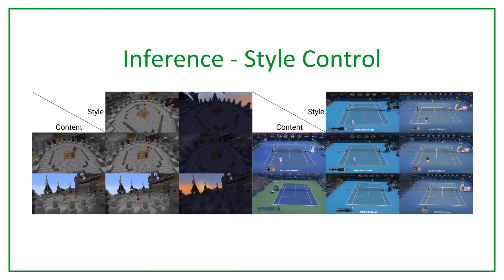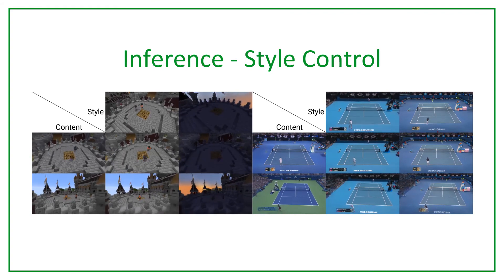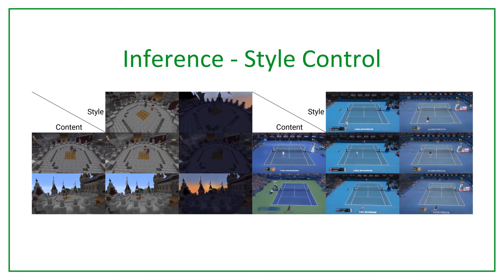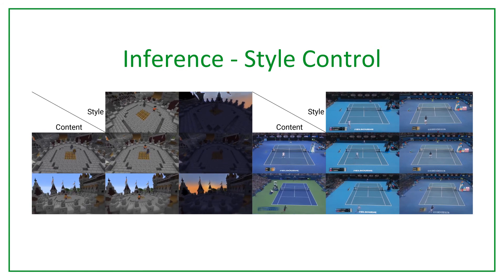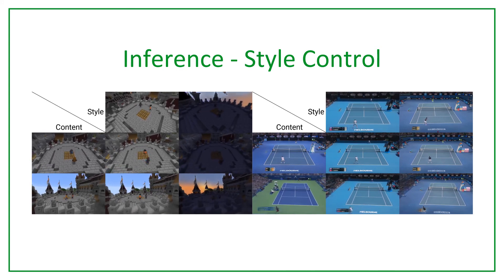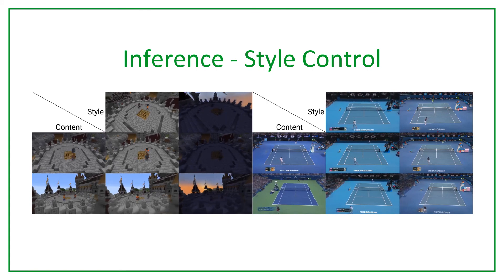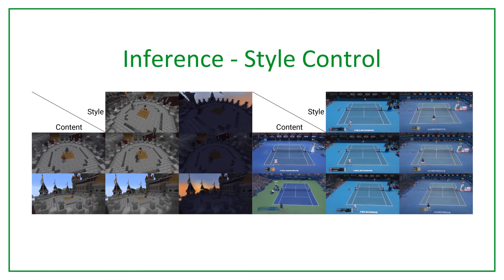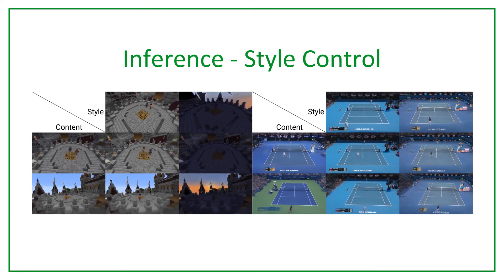We also find that it's possible to manipulate the appearance of each object. We take a video sequence in the first column, providing the content. Then, we consider several style videos in the first row. Our method can control the style of the video sequences to obtain the desired appearance of the scene.